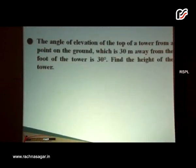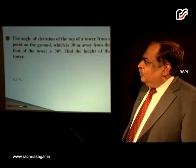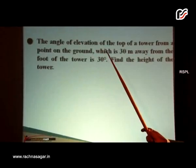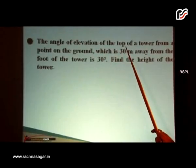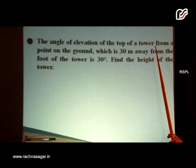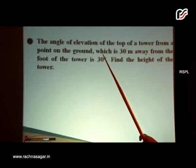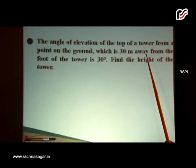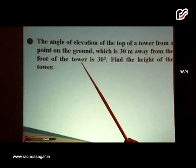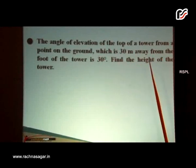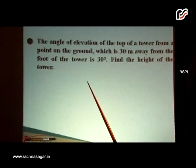Now we will solve some problems. The first question: the angle of elevation of the top of a tower from a point on the ground, which is 30 meters away from the foot of the tower, is 30 degrees. Find the height of the tower.